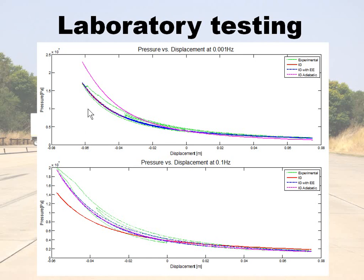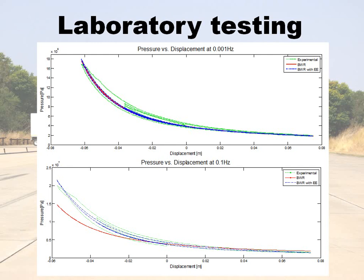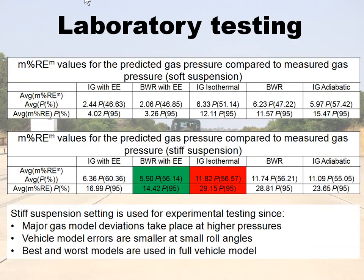The model with the energy equation adjusts to both cases because it takes into account heat exchange with the surroundings. Similarly, the real gas approach with the energy equation predicts both high frequency and low frequency inputs with good accuracy, whereas the isothermal under-predicts force at higher frequencies. For both soft and stiff suspension, the real gas approach with the energy equation gave significantly better results — a mean relative error of 3.26% compared to approximately 15.5% for the adiabatic model on the soft suspension.